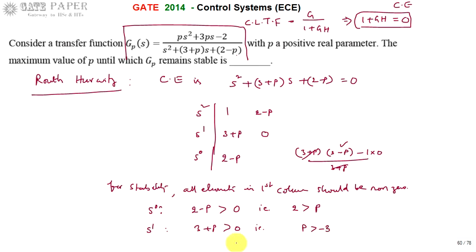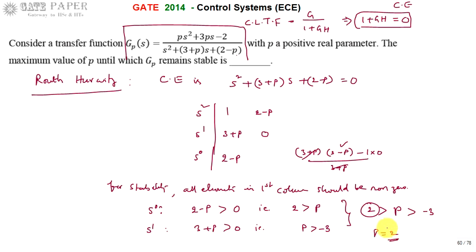The s² coefficient is 1, which is already greater than 0, so no condition on p is needed from that row. From the s¹ and s⁰ conditions, p must lie between −3 and 2. The maximum value of p at which the system is stable is 2. If p equals 2 or greater, the system becomes unstable. So the answer for the maximum value of p is 2.